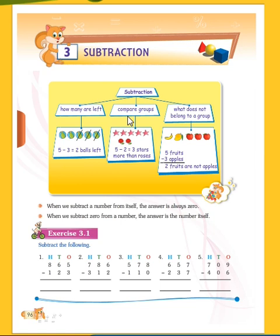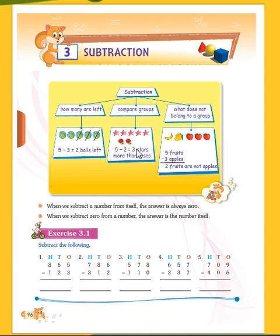The second concept is comparing groups. Here we have stars and roses. Let's count how many stars we have: one, two, three, four, five — we have five stars. And how many roses? One, two — only two roses. Five minus two equals three, so we have three more stars than roses.